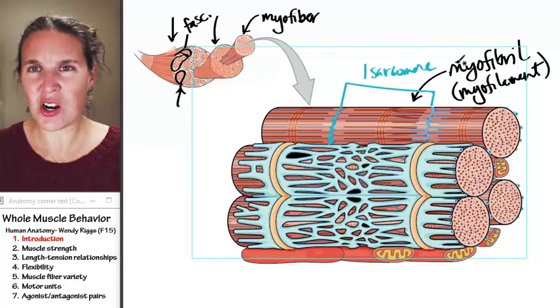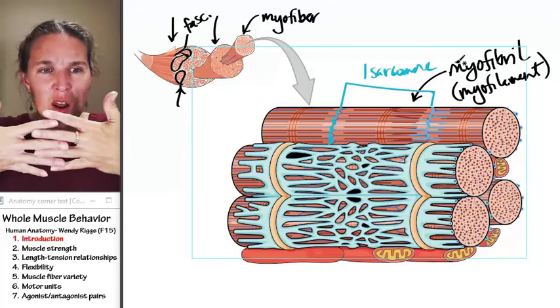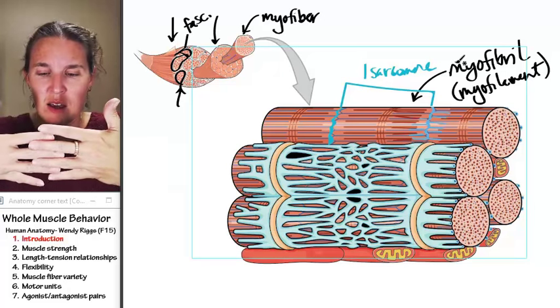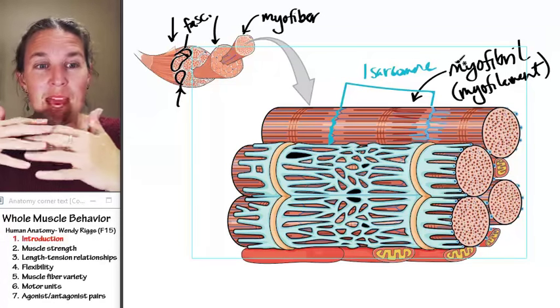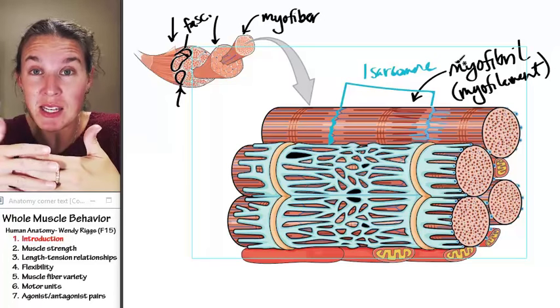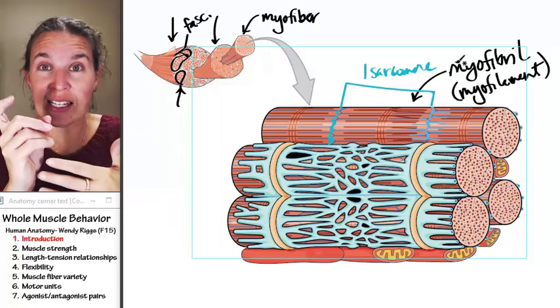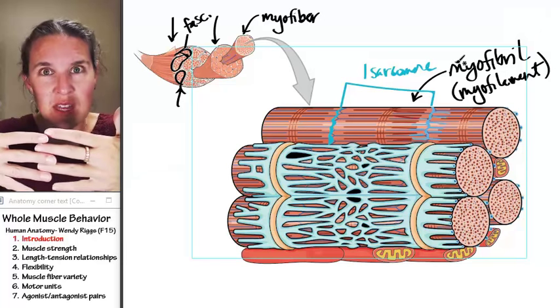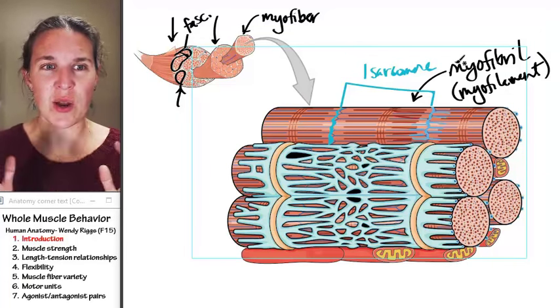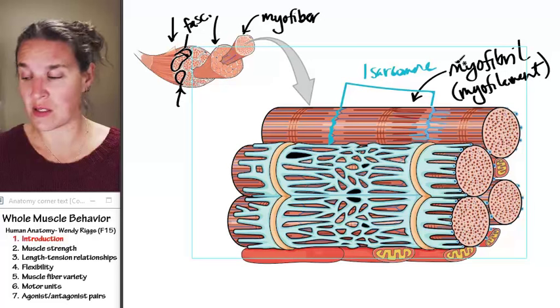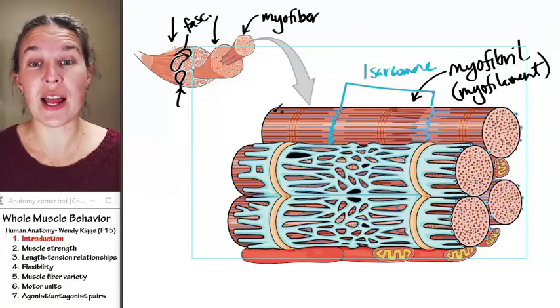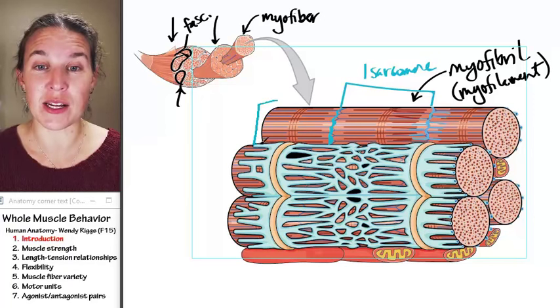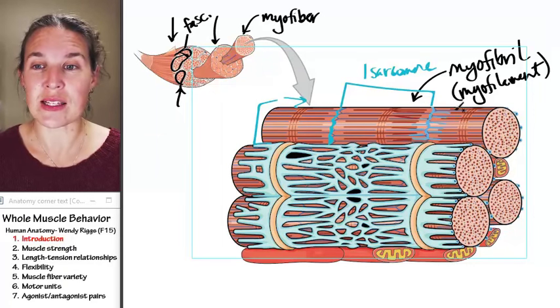And remember that a sarcomere is nothing more than overlapping thick and thin myofilaments. And remember that the thick filaments had those little contractile heads that grabbed ahold of the thin filaments, and you slide across, and you actually get the shortening of the muscle. So if we were to look at this, if we were to contract this single myofibril right here, it would shorten in this direction.